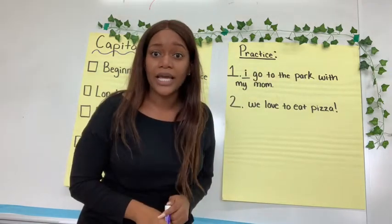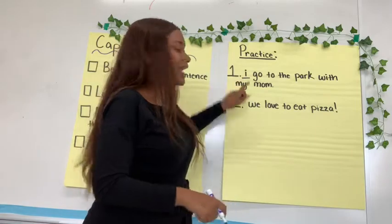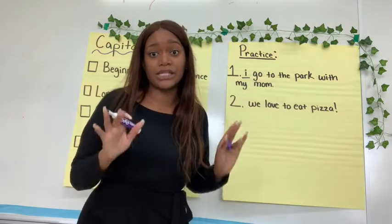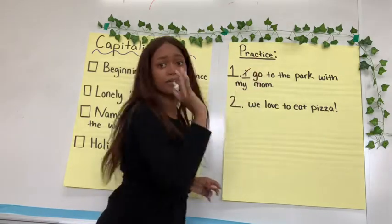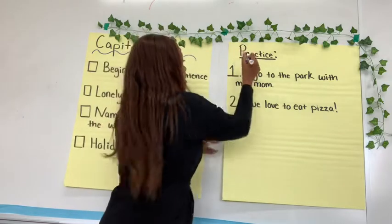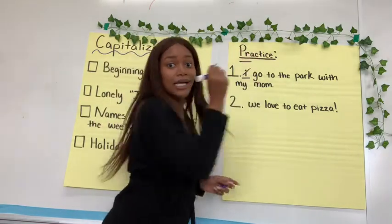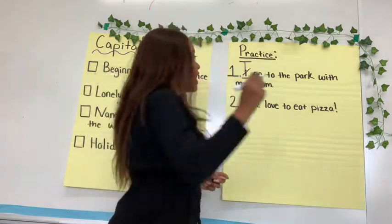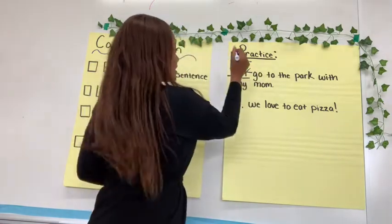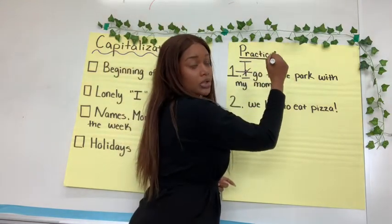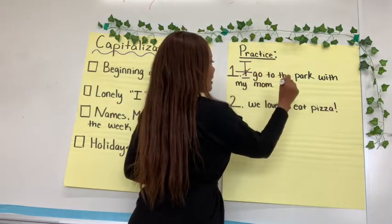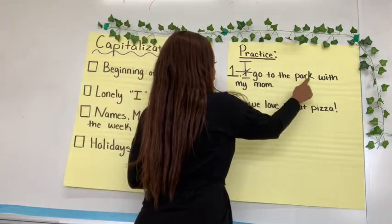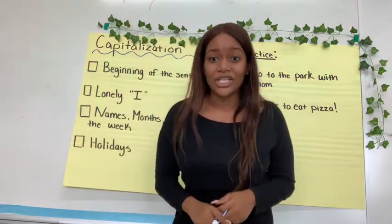Is our I an uppercase I? No, it's not, Ms. Samuel. We're in first grade and we know how to draw our uppercase I. So we have to cross this little lowercase i out — say goodbye, little i — and we're going to draw our uppercase I. We pull straight, lift; pull down straight, lift; and slide right, lift. Now let's read our sentence: I go to the park with my mom. We have a capital letter at the beginning of our sentence. Say yes, I'm ready. Let's move on to sentence two.